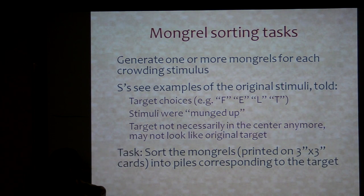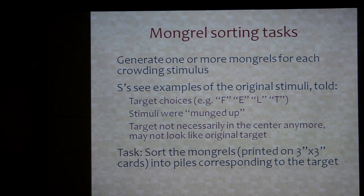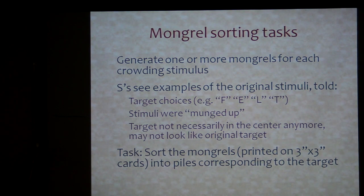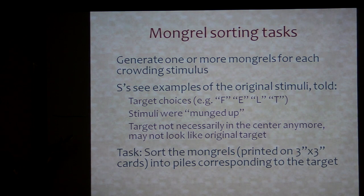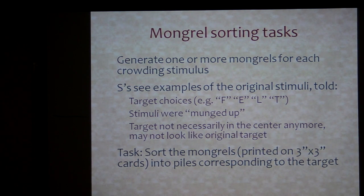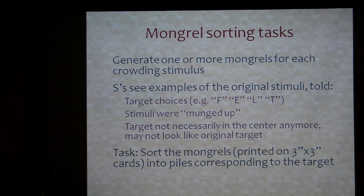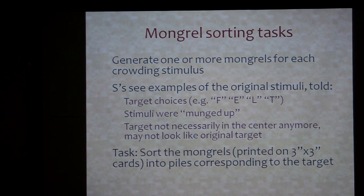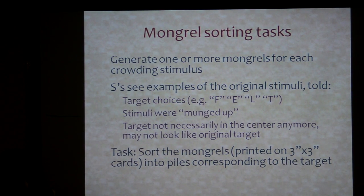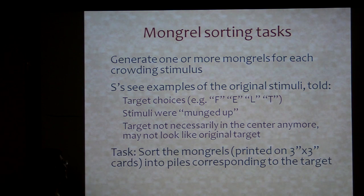What do we tell these subjects since they're looking at very weird images? They see examples of the original stimuli, so they know what the real flankers looked like and what the possible targets looked like. They're told what the target choices were, and that the images were munged up somehow. They're told that the target is almost certainly not in the center anymore — it could be anywhere; it may not be a single thing; they might just see features of the target in several places. And again, they sort them into piles.